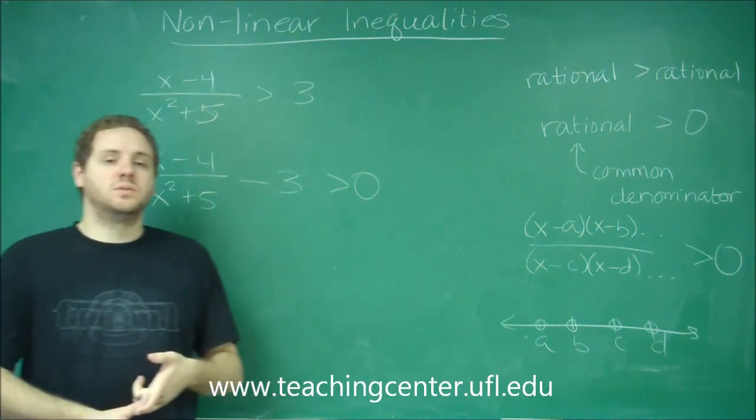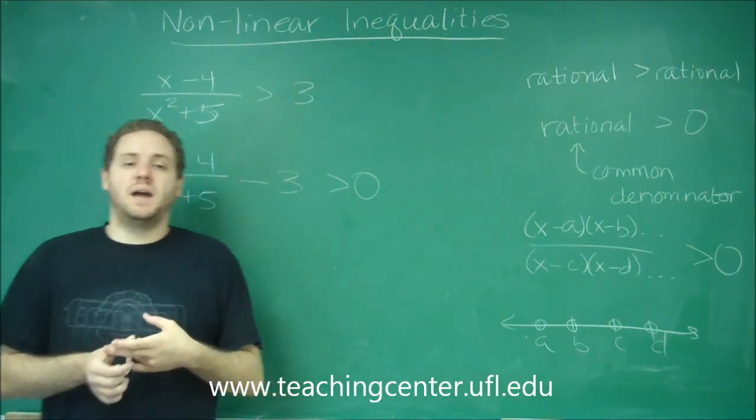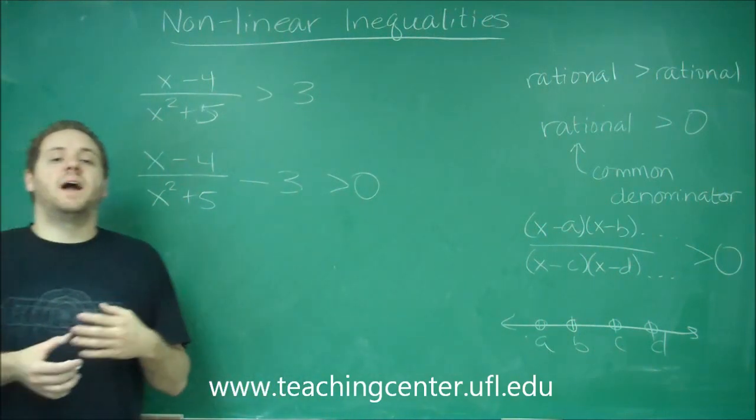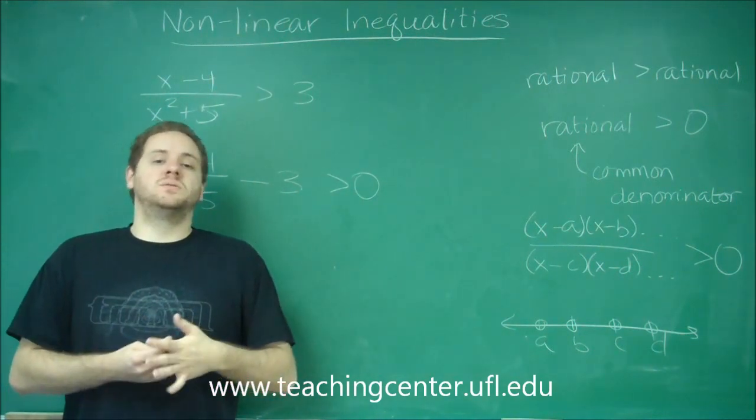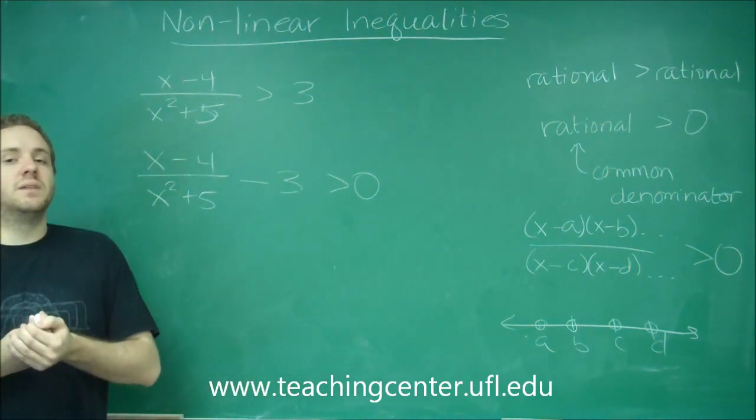So anytime you have a rational inequality or a polynomial inequality, you always want to get one side of it equal to zero, and you want to factor out the rest,